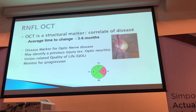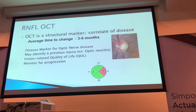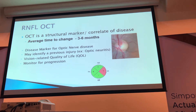Historically we've used RNFL OCT, which can be very helpful to confirm questionable optic nerve pallor on exam. You can actually see RNFL loss on OCT. It can be helpful as a disease marker for optic nerve disease, may identify previous injuries such as a history of optic neuritis, and you can monitor for progression. There's some correlation to disease with the structural abnormalities.